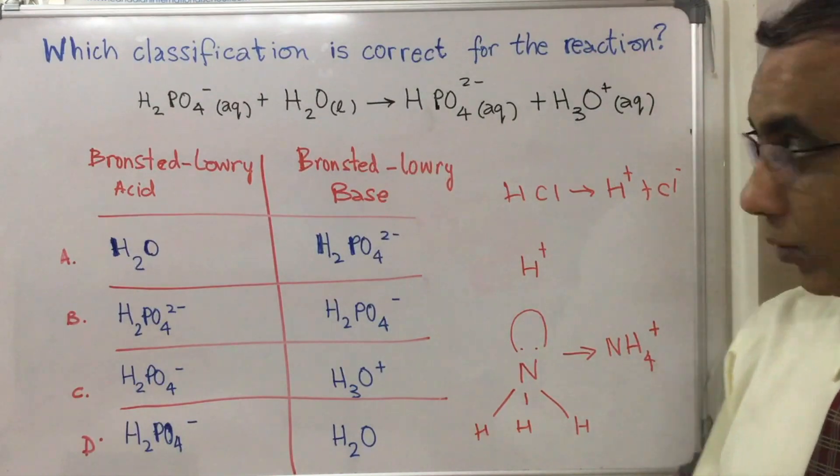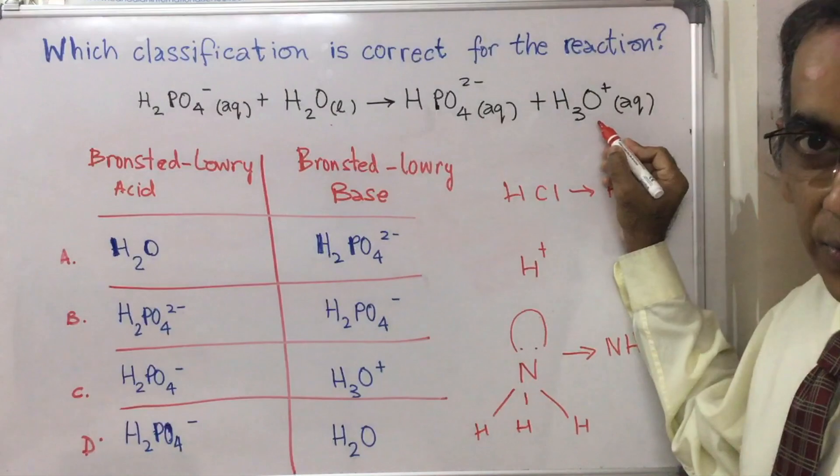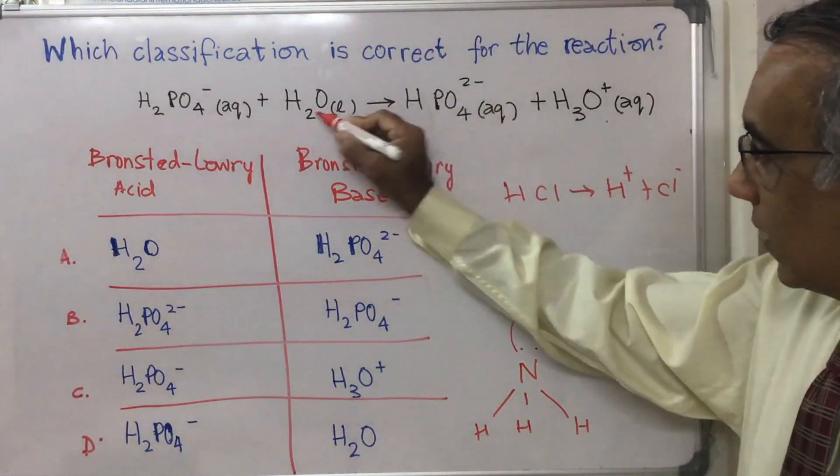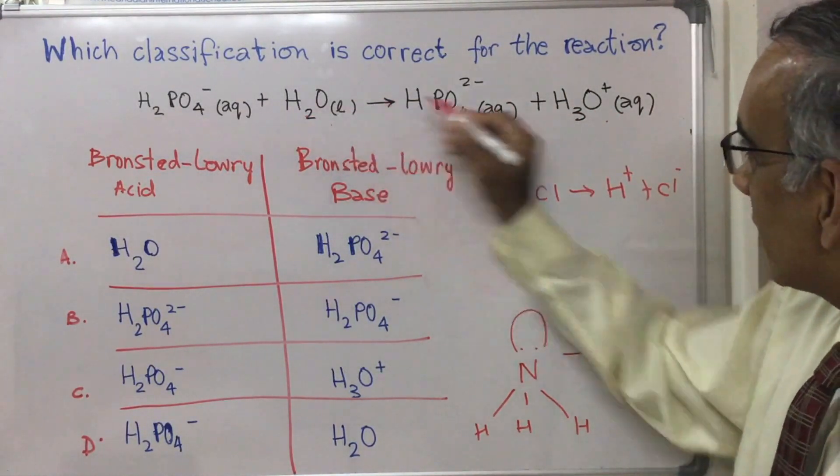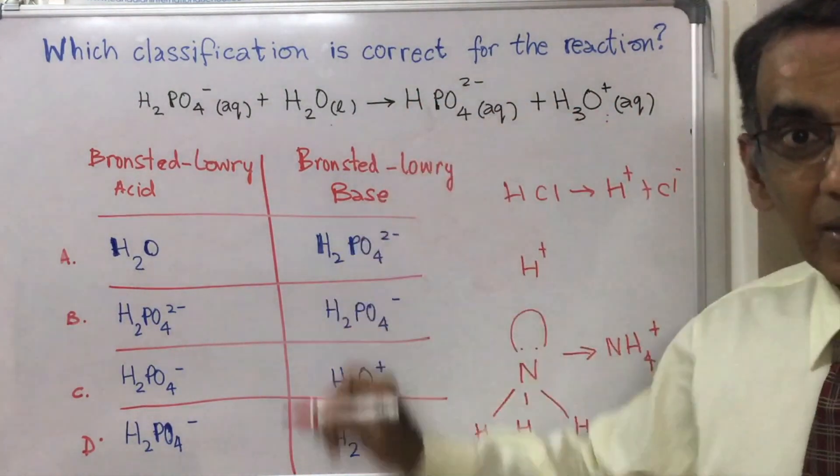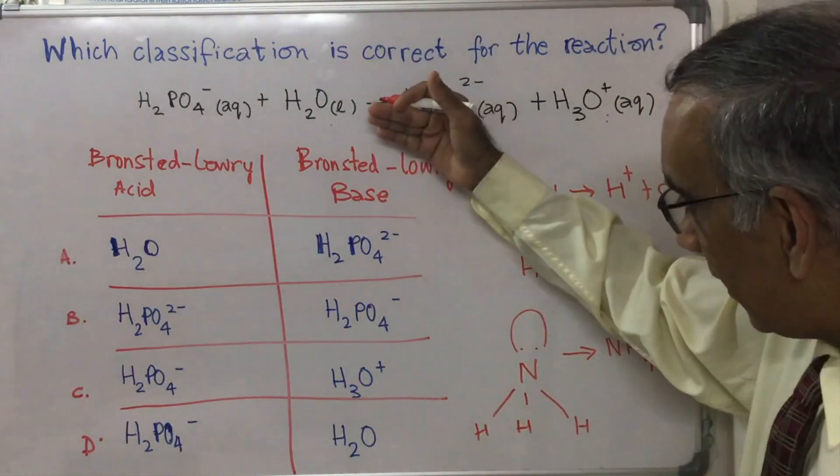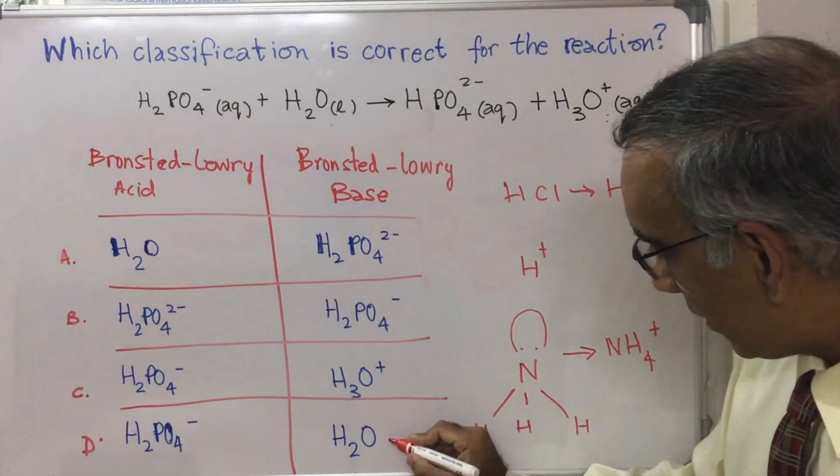And we look right here at H2O liquid becoming H3O positive aqueous. You just add a proton to this H+ and it becomes this, so water here is behaving as a proton acceptor which is a Bronsted-Lowry base, and immediately you go to this column and you see H2O is here and you realize that the answer must be D.